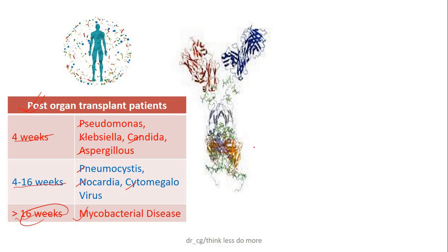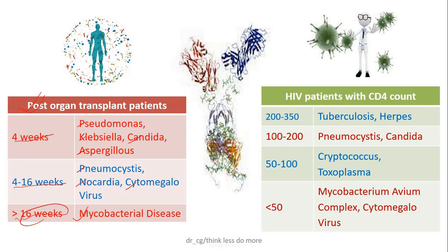Among HIV patients, if CD4 count is more than 200, infections with TB or herpes can be suspected. If CD4 count is between 100 to 200, lung infection can be caused by Pneumocystis or Candida.